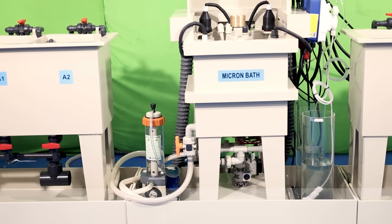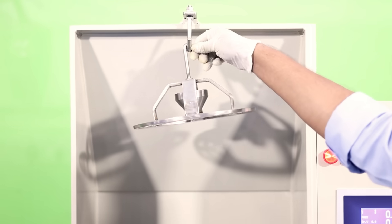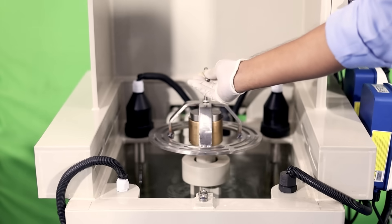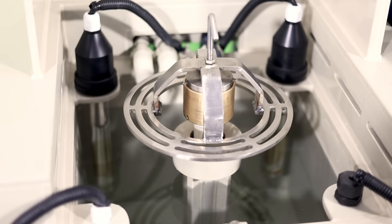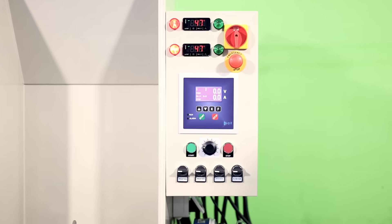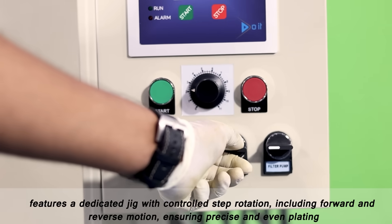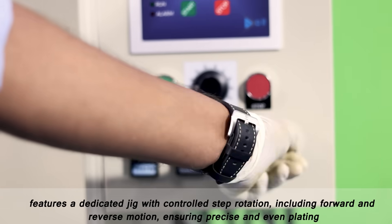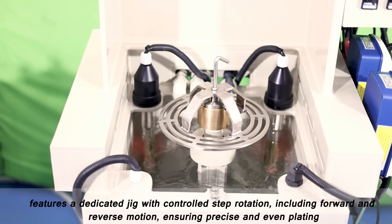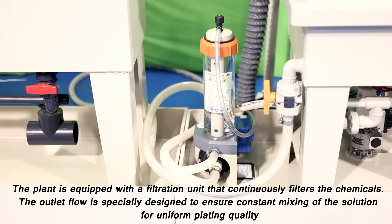The main micron plating bath features a dedicated jig with controlled step rotation, including forward and reverse motion, ensuring precise and even plating. The plant is equipped with a filtration unit that continuously filters the chemicals.